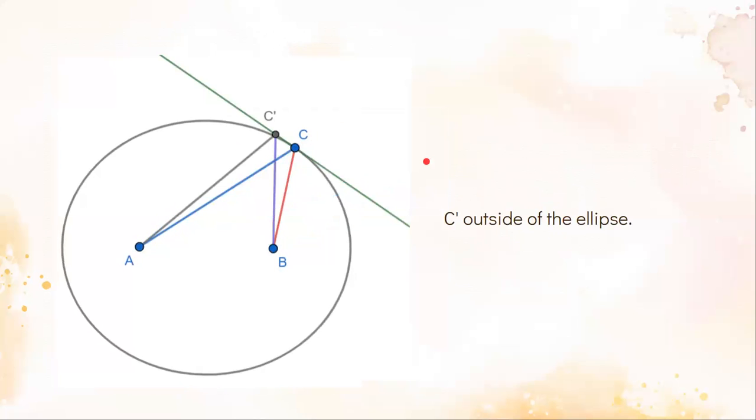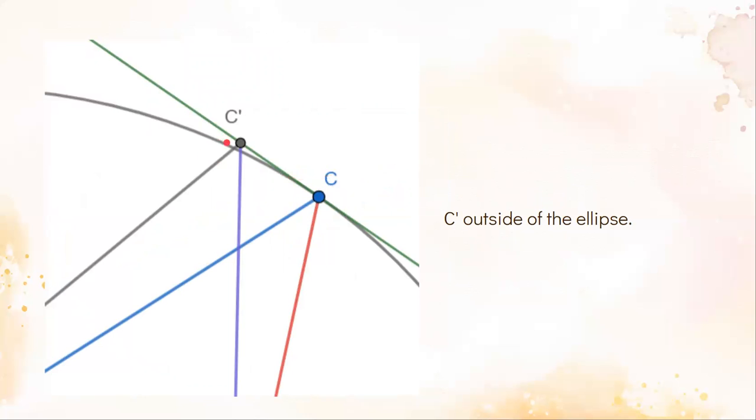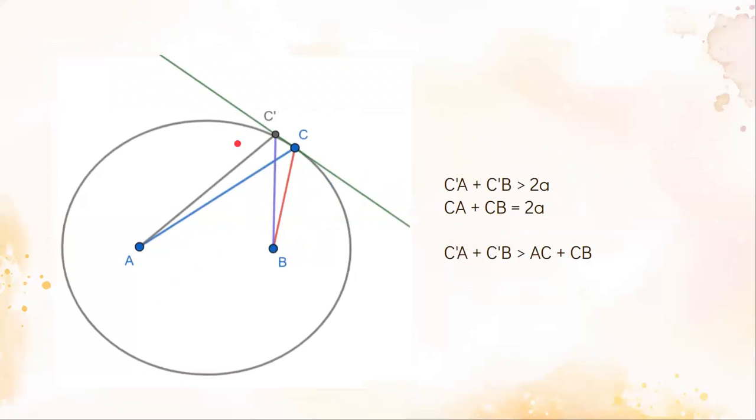Now let's go back to our original diagram. Zooming in, we see that C' must be outside the ellipse. This is because the green line is a tangent line, which only intersects the ellipse once.